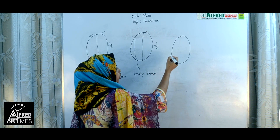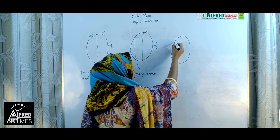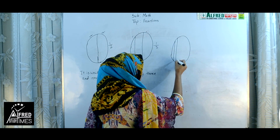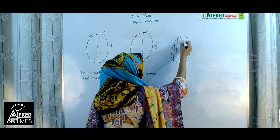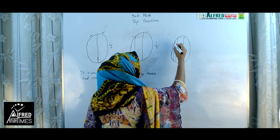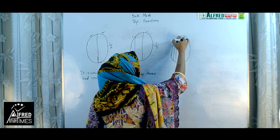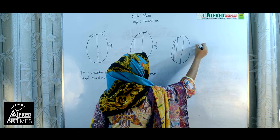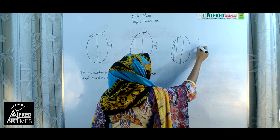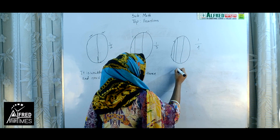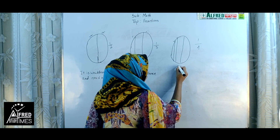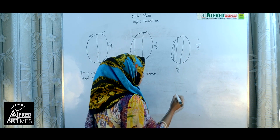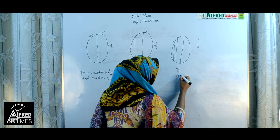When we divide into four equal parts, all these parts we will call one fourth. It is written as 1 by 4 and read as 1 by 4.